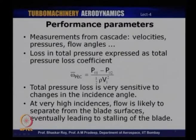Total pressure loss, and in general losses, are usually expressed using the symbol omega. Omega with a bar at the top — omega bar — means an average total pressure loss at the trailing edge of a particular cascade, where the subscript PLC refers to pressure loss coefficient. Pressure loss basically depends upon the difference in total pressure between the inlet and the exit of the cascade, with reference to the dynamic pressure available for the cascade.